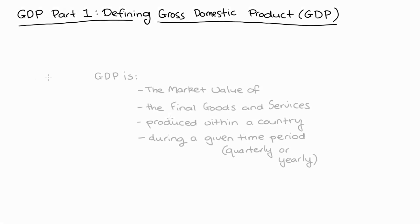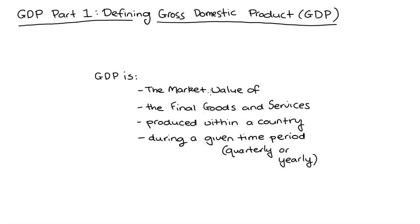We're going to define GDP as the market value of the final goods and services produced within a country during a given time period, so usually quarterly or yearly. Intuitively, GDP is really about measuring economic activity — how much is produced. It's worth just thinking about each of the parts of our definition here in turn.